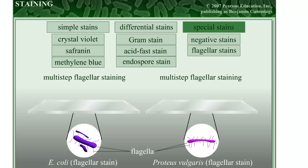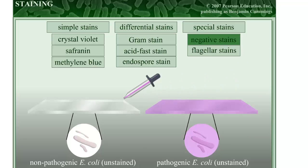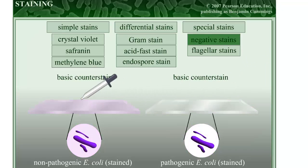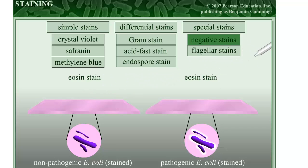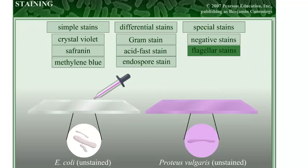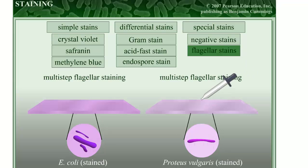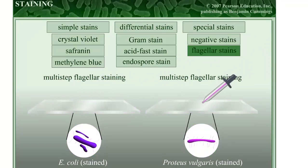Special stains are stains that interact with special bacterial features or structures such as the flagella or capsules formed by certain bacteria. Negative stains stain the background, leaving cells colorless. These acidic dyes are repelled by the negative charges on the surfaces of cells. Examples of negative stains include eosin and nigrosin. Some bacteria use tiny structures called flagella for locomotion. Flagella are too small to be seen with a microscope, but they can be stained in a multi-step process involving the dyes pararosaniline and carbol fuchsin, and the mordants tannic acid and potassium alum. The number and arrangement of flagella are important in the classification of bacteria.